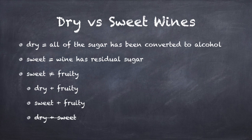Wine drinkers often confuse sweetness with fruitiness, but fruitiness is actually something entirely different. It is simply the propensity of a wine to have fruit-like flavors and aromas. This has nothing at all to do with the sugar content. A wine can be both sweet and fruity, or it can be both dry and fruity, but it can never be both sweet and dry.